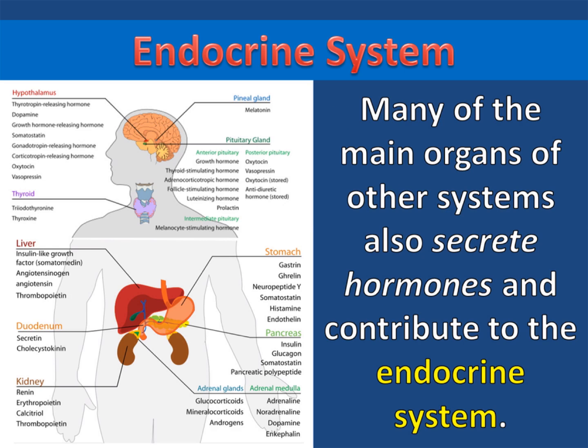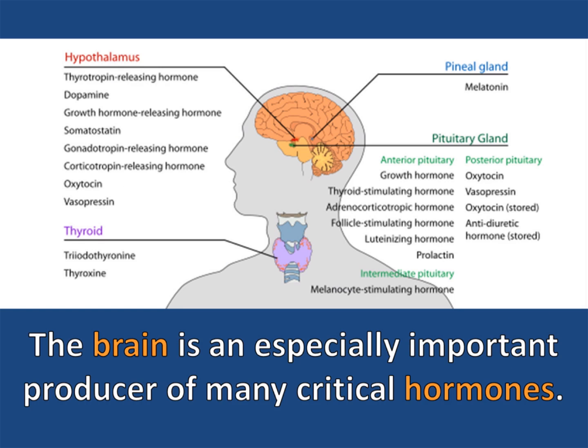Many of the main organs of other systems also secrete hormones and contribute to the endocrine system. The brain is an especially important producer of many critical hormones. Most of these hormones are produced in the hypothalamus or the pituitary gland.